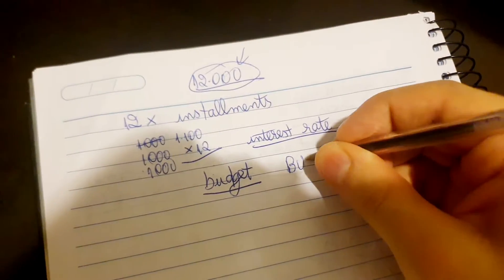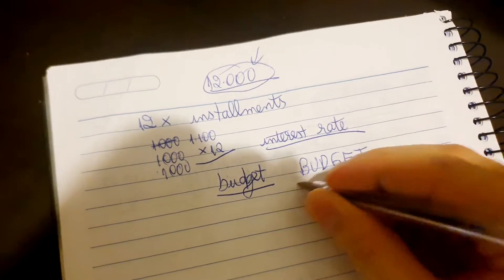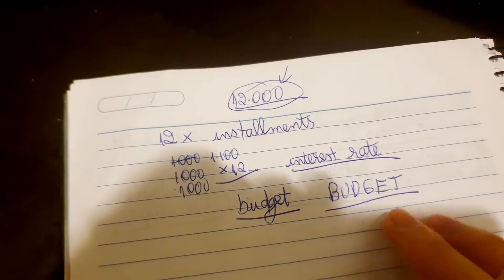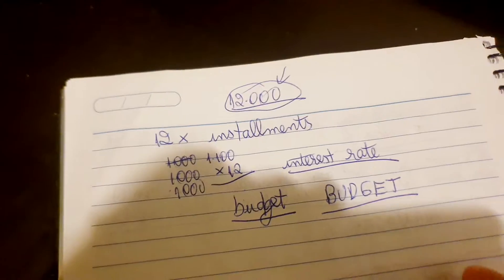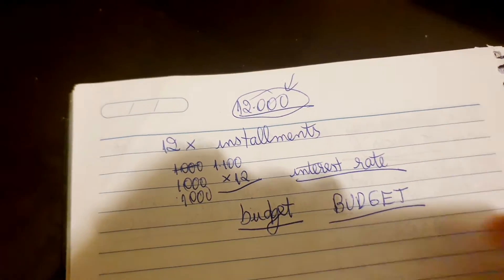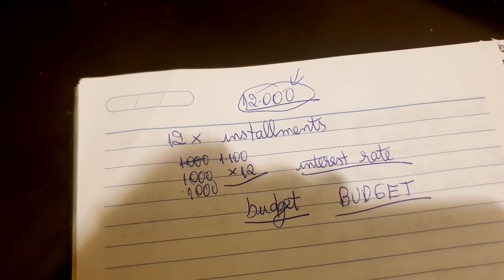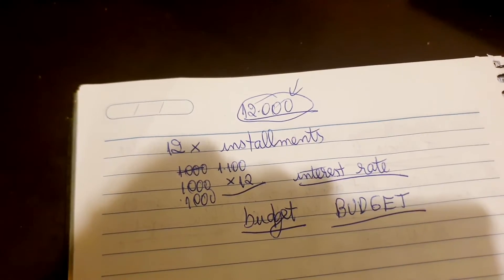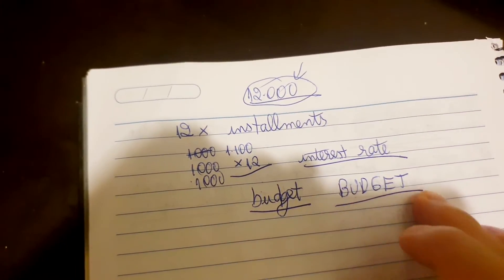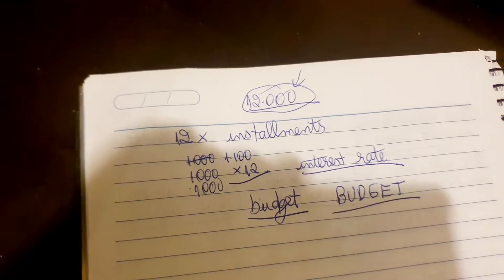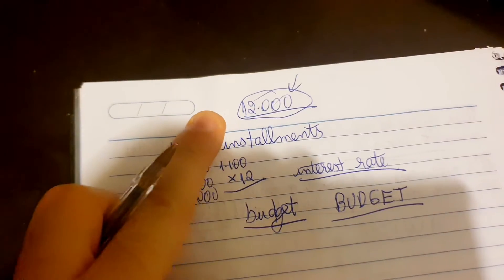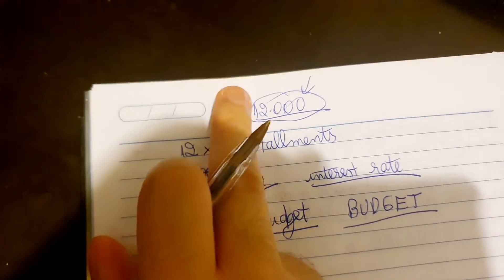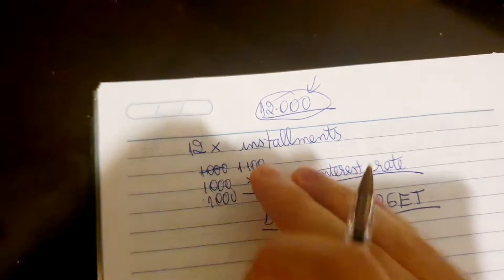Your budget is essentially all your net earnings — your net salary or net income you earn per month from a company or from your services. The budget is your capacity to pay: how much money you earn compared to what you owe. You borrowed from the bank and now have to pay little by little according to what your budget allows.